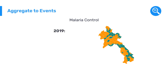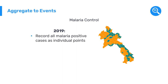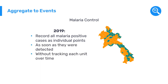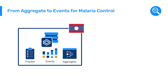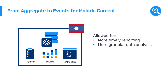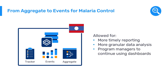Then, in 2019, the Ministry of Health decided to record all malaria-positive cases in malaria control settings as individual data points as soon as they were detected, but without tracking each unique case over time. To do this, they replaced their monthly aggregate data forms with event data forms. This change allowed for more timely reporting and more granular data analysis to support malaria control efforts, and as event data can be automatically aggregated in DHIS-2, this allowed program managers to continue using aggregate monitoring dashboards without the need for duplicate aggregate data reporting.